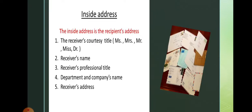The next component is the inside address, that is the receiver's address. The inside address is the recipient's address. It includes the receiver's courtesy title — such as Miss, Mrs., Mr., or Dr., or Engineer. The second line has the receiver's name, then the receiver's professional title, then the department and company's name, and then the receiver's address.